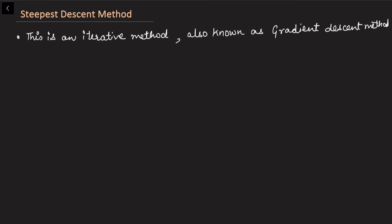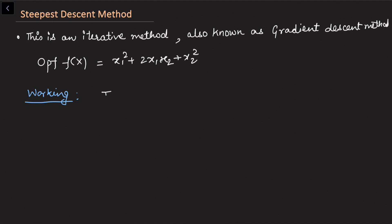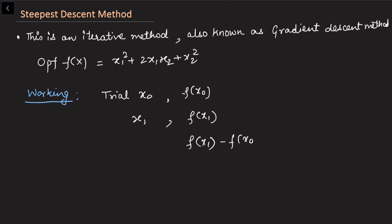Here I want to optimize a function f(x) — for example, x1² + 2x1x2 + x2². This is an unconstrained problem and suppose the analytic solution is not possible. We start from a trial solution x0, assuming it is the optimal point, then calculate the function value there, find the next point x1, and check whether the difference satisfies a given precision criteria.